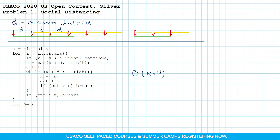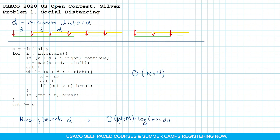After these improvements, this part of the solution runs in O(n + m), allowing us to check whether d is a valid minimum distance. To find the actual maximum minimum distance d, we perform a binary search, giving an overall time complexity of O((n + m) * log(maximum distance between two cows)).